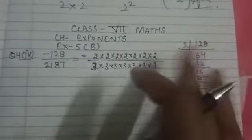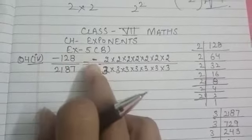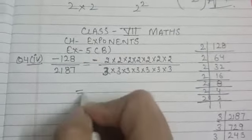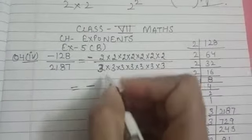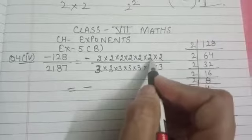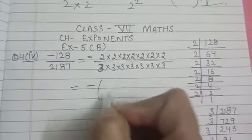The negative sign is given once, so I have put that negative sign only one time. We can write the negative sign as it is. How many 2s are there? 1, 2, 3, 4, 5, 6, 7. And same, 7 3s.